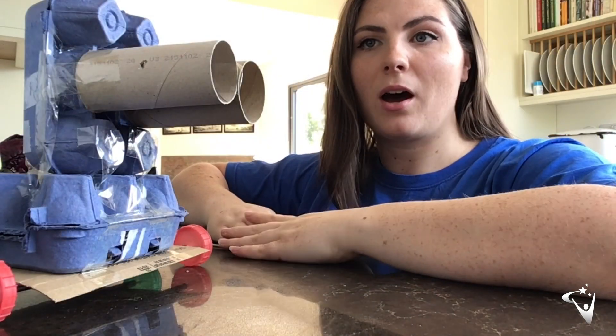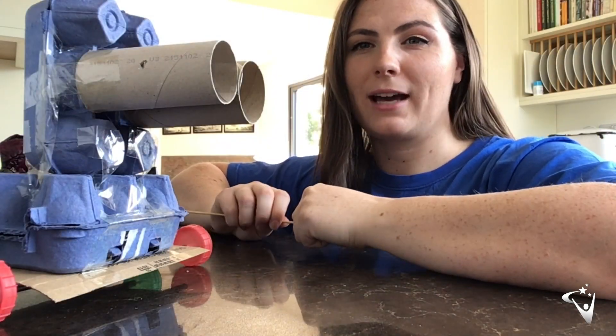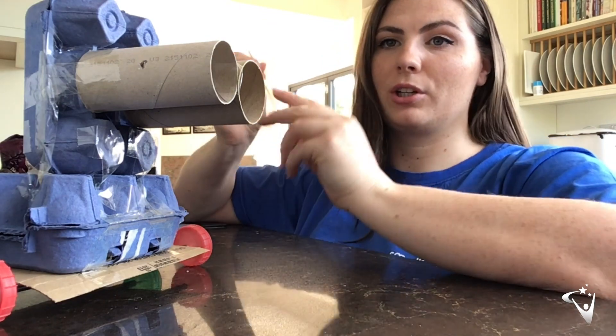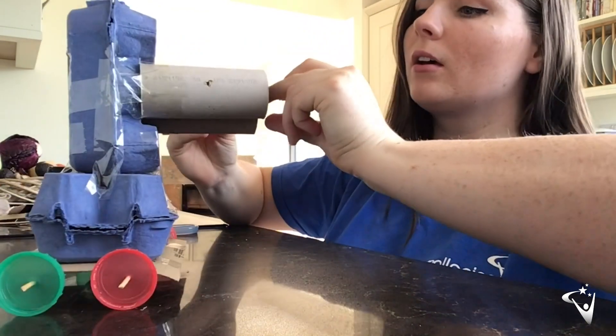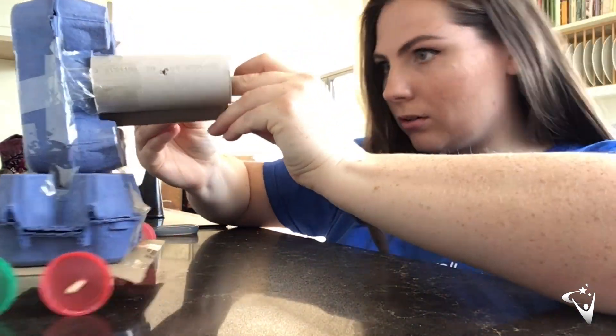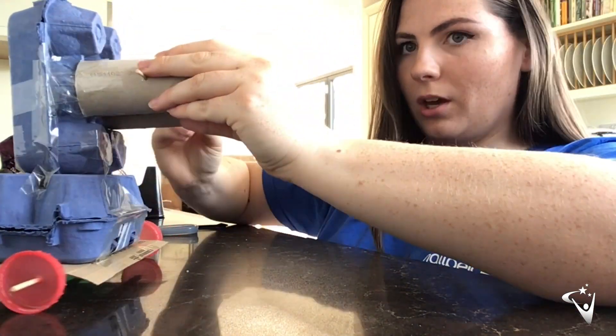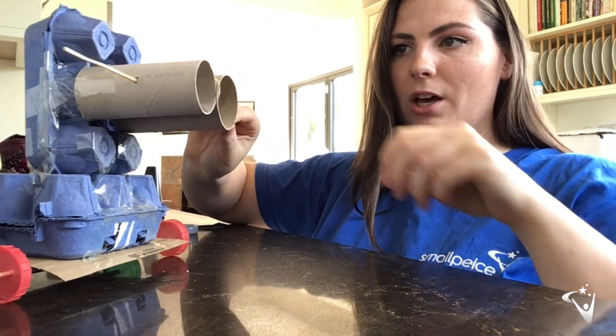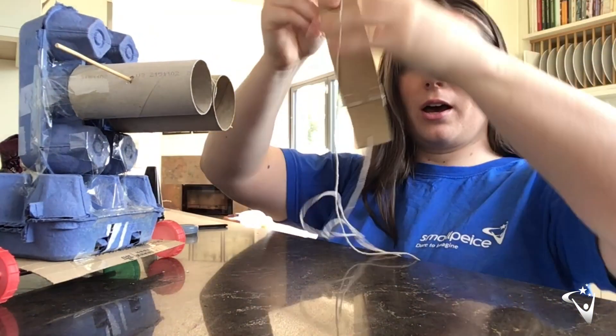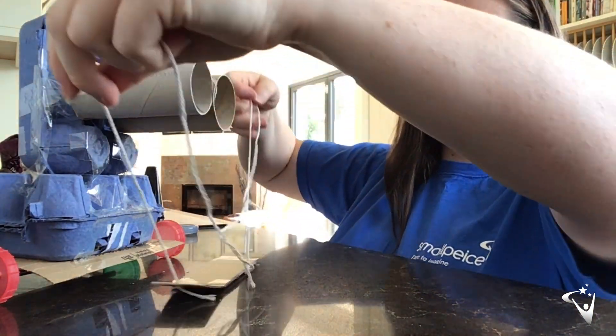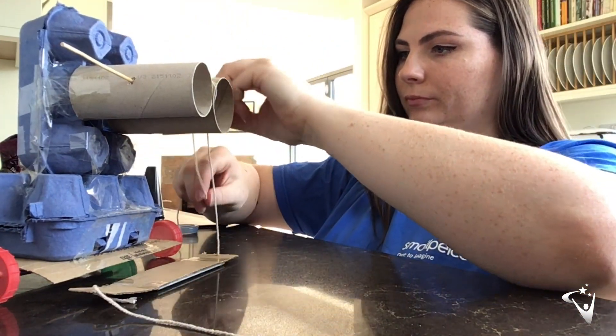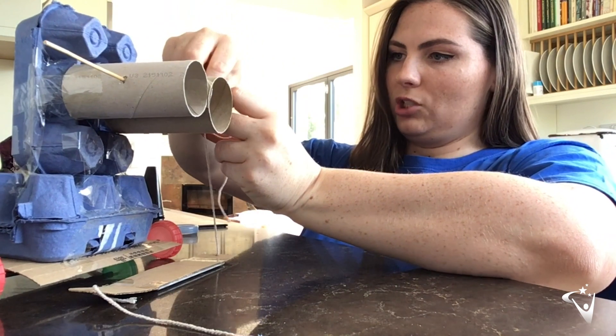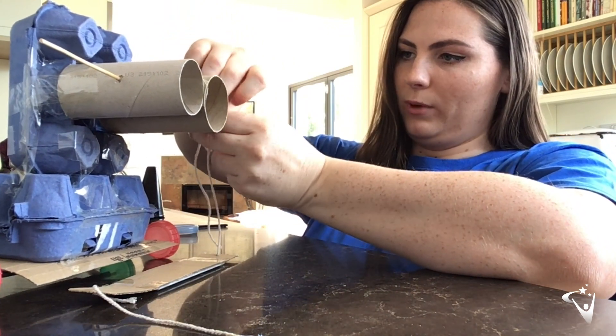So as you can see, I've added some arms onto my robot. This is what's going to act as a sort of winch, and I'm going to thread this stick through these holes that I've made. It should be able to freely turn, and then I'm going to tie this magnet so that it reaches the floor onto each end of my winch.